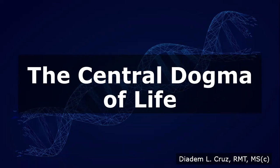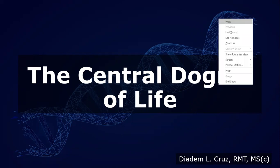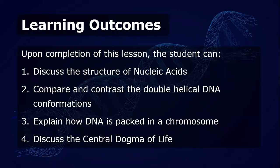Good day, everyone. I will be discussing module 2, which is the central dogma of life. For the learning outcomes, I will be discussing the nucleic acid structures — we have the DNA and RNA. We'll compare the double helical DNA conformations: A-DNA, B-DNA, as well as Z-DNA. I will also explain how DNA is packed in the chromosomes — we have the histones, the chromatins, and the central dogma of life, which I will discuss separately in a different video.